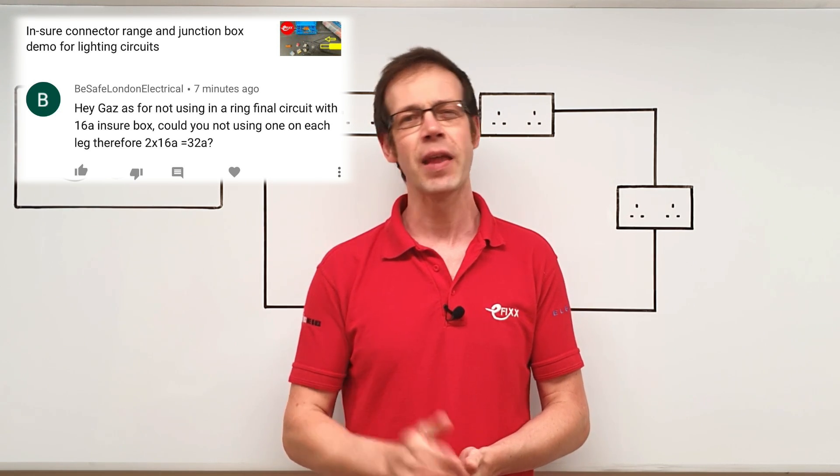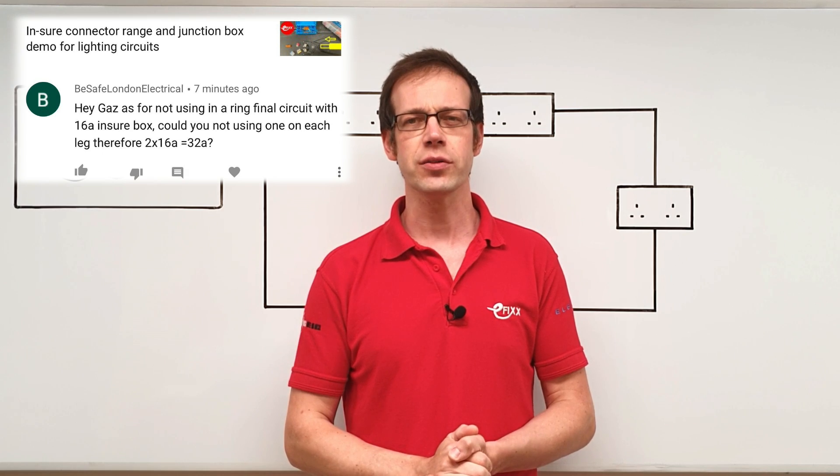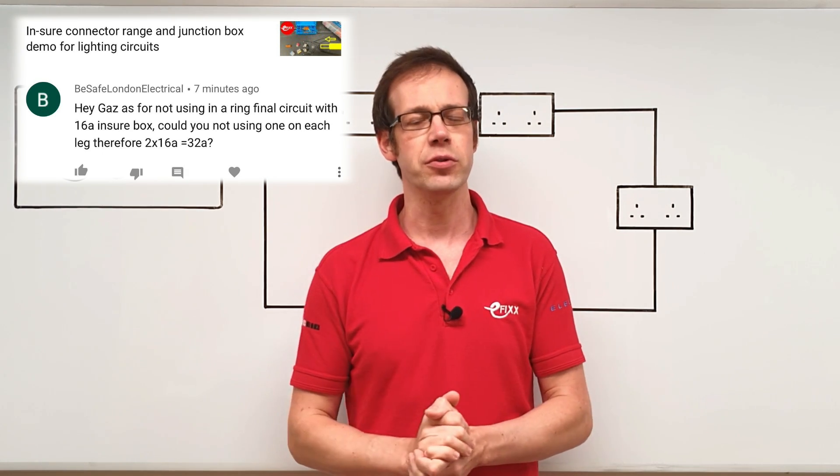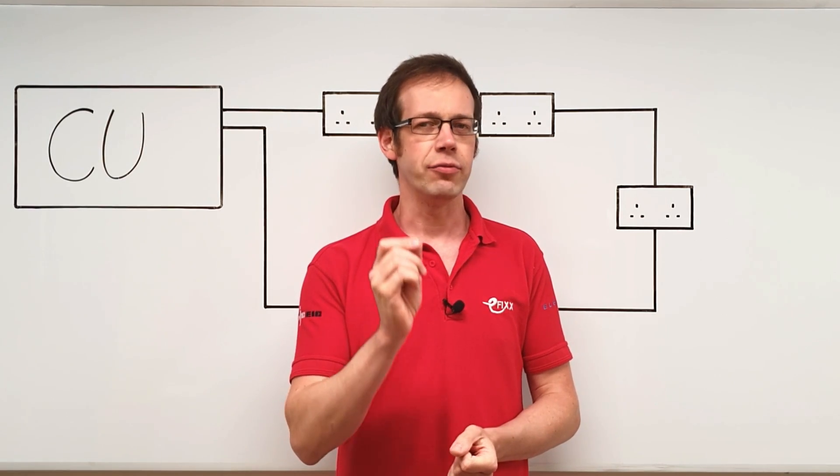He asks, 'As for not using a 16 amp Insure box in a ring final circuit, could you not use one on each leg? Therefore, two times 16 amps equals 32 amps.'